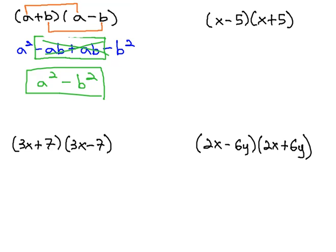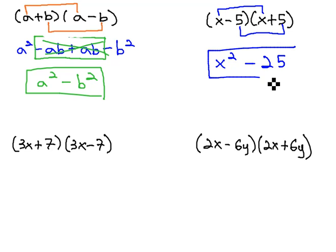In this second example where we have x minus 5 times x plus 5, we notice this relationship. They're exactly the same except one is a sum and one is a difference. Since this is the case, we can take a shortcut and only multiply the first two, x times x is x squared, and the last two, negative 5 times 5 is negative 25, and we have our solution.